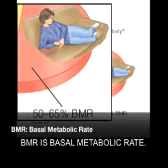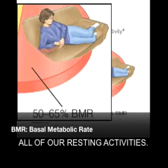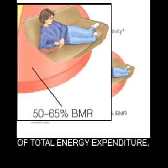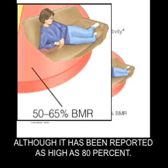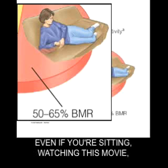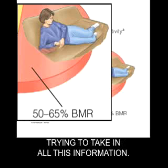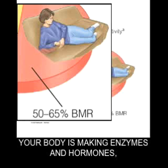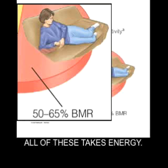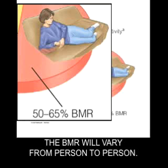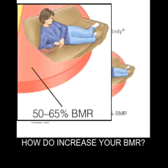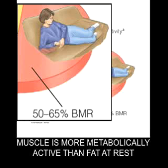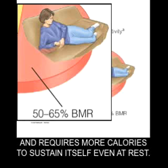BMR, or basal metabolic rate, is the energy we use to maintain all of our resting activities. It ranges from about 50–65% of total energy expenditure, though it has been reported as high as 80%. Even sitting and watching this video, your brain is working, your heart is beating, your body is making enzymes and hormones, and your cells are being broken down and rebuilt — all of this takes energy. BMR varies from person to person, and the only way to increase it is to gain muscle, since muscle is more metabolically active than fat and requires more calories to sustain itself, even at rest.